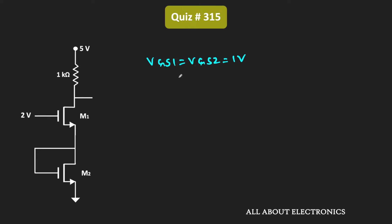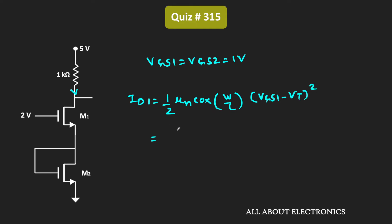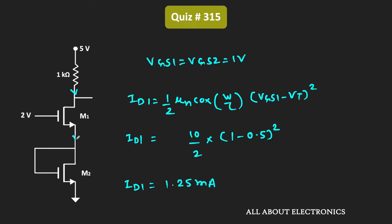Now that we know the value of VGS, we can easily find the drain current. The drain current Id1 = (1/2) · μn · Cox · (W/L) · (VGS1 − Vt)². We know that μn · Cox · (W/L) = 10 mA/V². Therefore, Id1 = (10/2) · (1V − 0.5V)² = 1.25 mA. Since Id1 = Id2, both drain currents equal 1.25 mA.